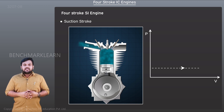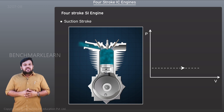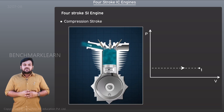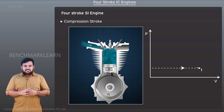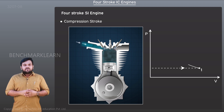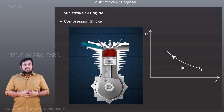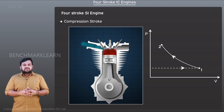The system is now in state one. During the next stroke, the compression stroke, represented by process one to two in the PV diagram, the piston moves from the bottom dead center to the top dead center, resulting in the compression of the air-fuel mixture.